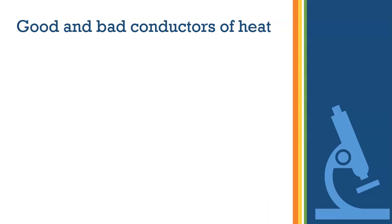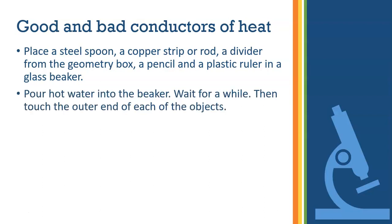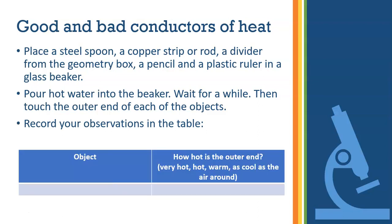Good and bad conductors of heat: Place a steel spoon, a copper strip or rod, a divider from the geometry box, a pencil, and a plastic ruler in a glass beaker. Pour hot water into the beaker. Wait for a while, then touch the outer end of each object. Record your observations in the table — noting what object you used and how hot the outer end feels: very hot, hot, warm, or as cool as the air around. Students can do this activity at home in the presence of an adult.